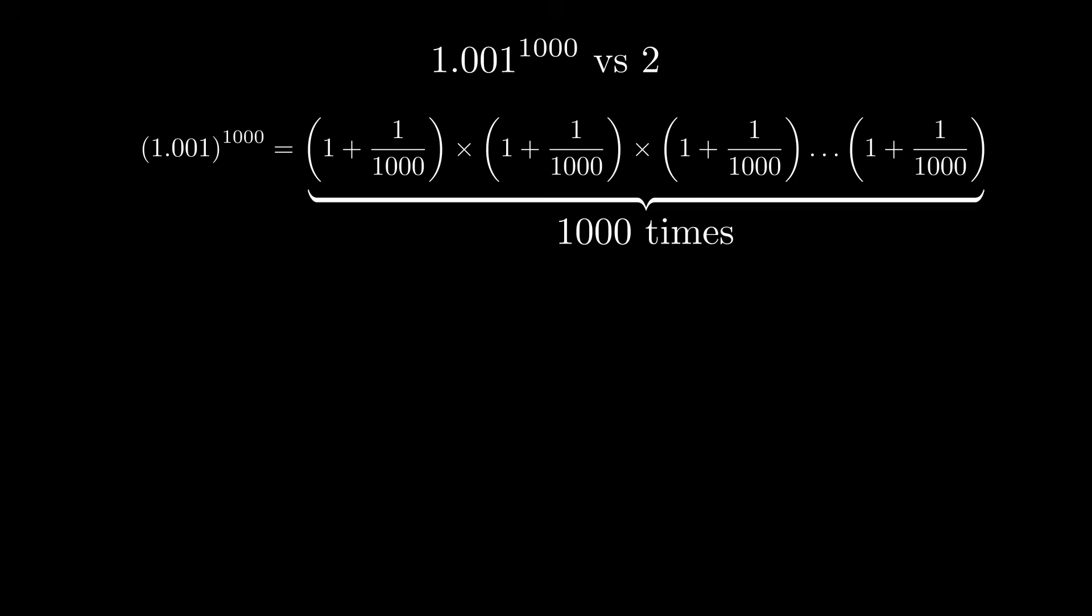How about the number 2? It stands tall, a solid and familiar figure in math, but we'd like to express it somehow like the other number. Is there any way to do that? Well, it might not seem to help initially, but 2 is the same as 2,000 over 1,000.